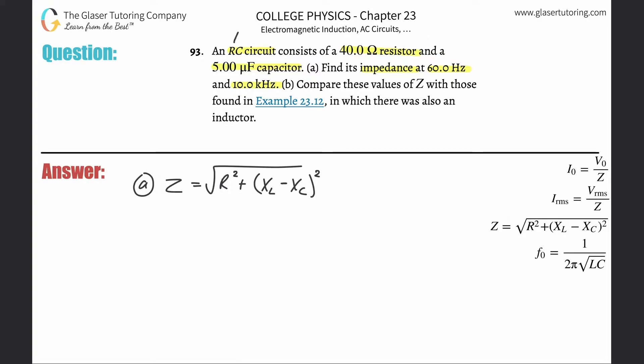This is an RC circuit, meaning it has a resistance and a capacitance but not an inductance, so we cancel the inductance term. This reduces to R squared plus negative X sub C squared, but the negative sign will disappear when squared, so it's just R squared plus X sub C squared.